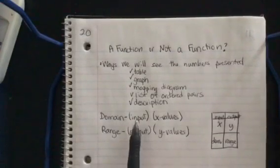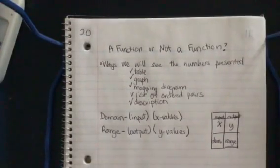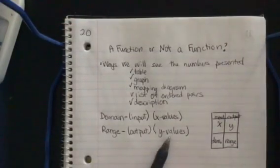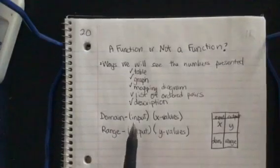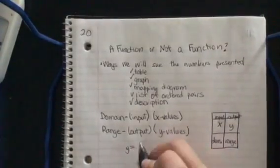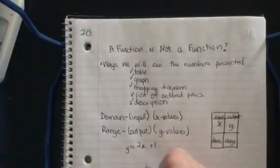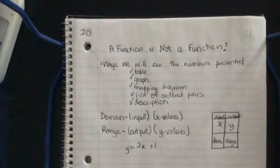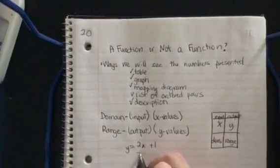So domain are the numbers that we're putting into the equation. Sometimes they'll be given to us. And our range is what goes out. So if you guys remember back to those function tables, we would put numbers in. They would list the x-values, and then we'd have an equation, like y equals 2x plus 1. And they gave us x-values, but on some of those tables, they didn't give us x-values.